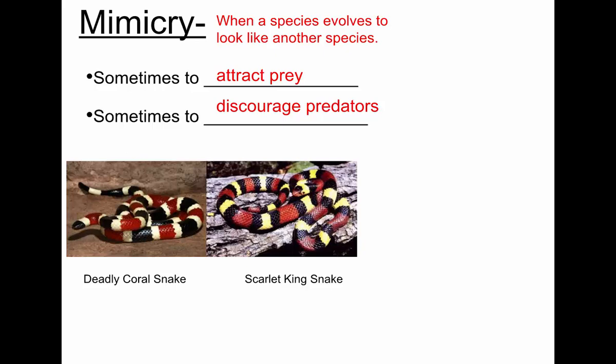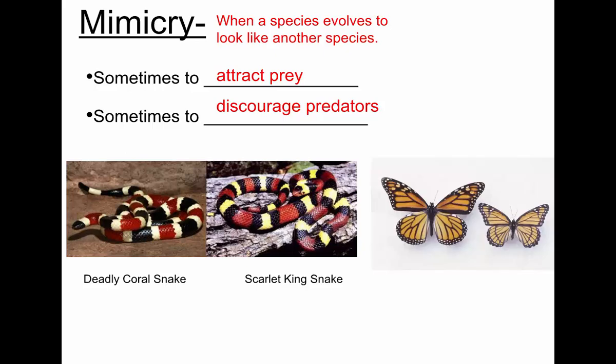There's a saying to help you remember which is which: red next to yellow, you're a dead fellow; red next to black, you're safe, Jack. So you can see the red is next to the yellow in the coral snake, and the red is next to the black in the kingsnake.